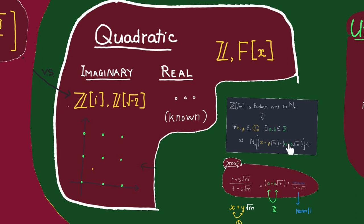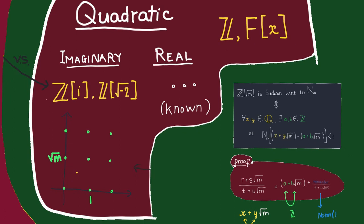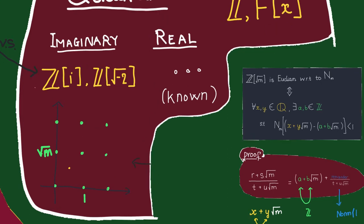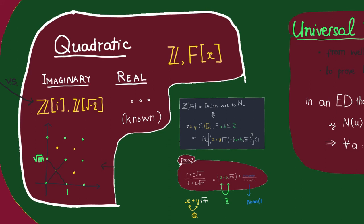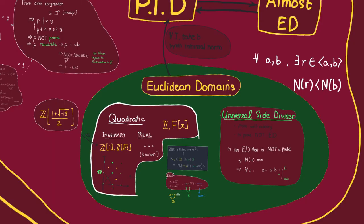In the imaginary quadratic case we can use the geometry of the complex plane. We view A + B√m with A, B in ℤ as lattice points — the lattice on the complex plane spanned by 1 and √m. The criterion means that for every point with rational coefficients, there should be a lattice point of distance at most 1 from it. The worst-case locations are the centers of the rectangles, so it suffices to show that the half-diagonals are less than 1. From this, we can show that the only imaginary quadratic Euclidean domains under the usual norm are ℤ[i] and ℤ[√-2]. This helps us give examples of PIDs that are not Euclidean domains.